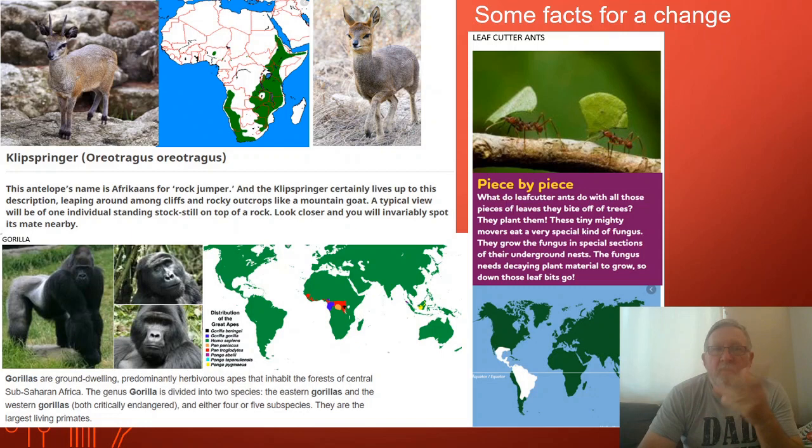Okay, I'm going to do something a bit different today. Here are some facts about some of those animals that we talked about before. So I've pulled up a bit of extra information about the klipspringer. You can see an adult and a baby and then the parts of Africa that that animal comes from. The antelope's name comes from Afrikaans for rock jumper and it's able to live up to that name because it does like to live in very rocky areas. You will quite often see pictures of them standing very still on tops of rocks, and that's because usually one is on the lookout while the other one's feeding.